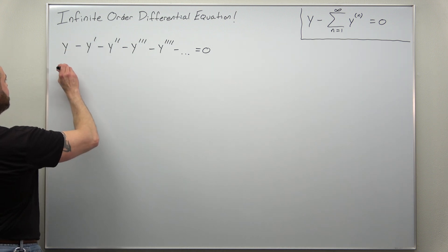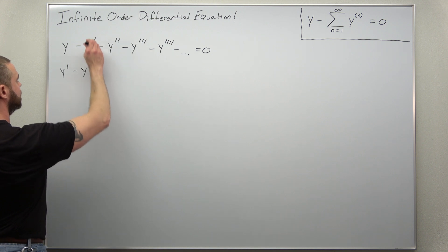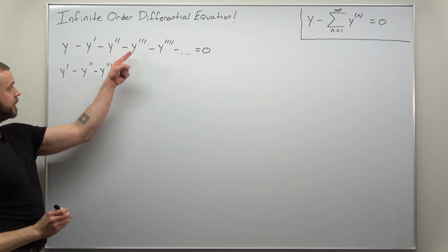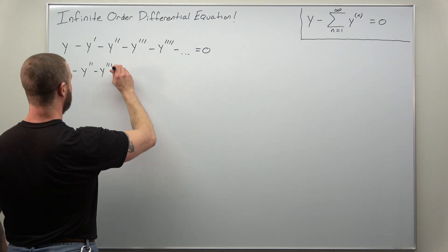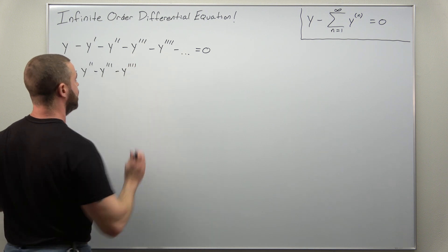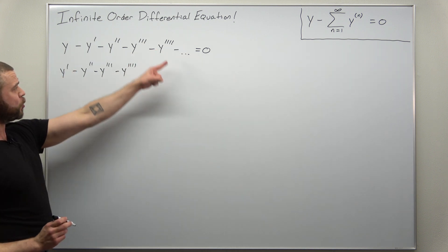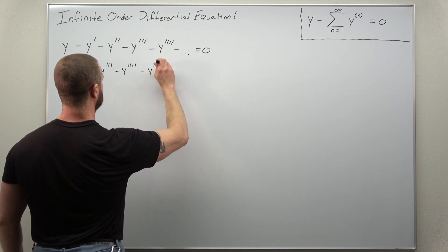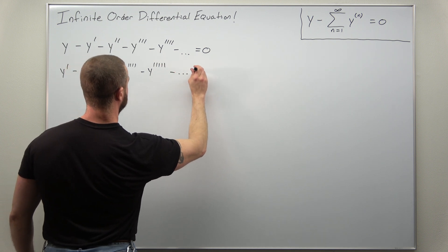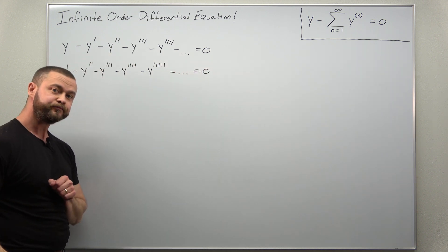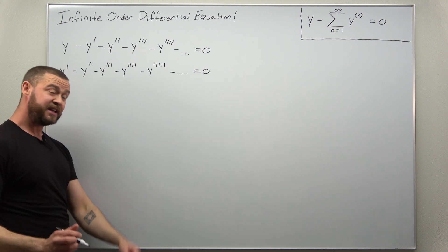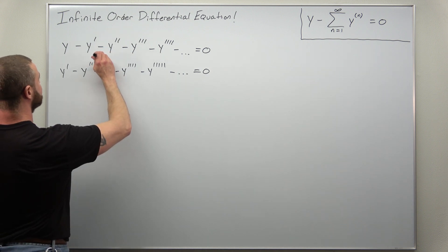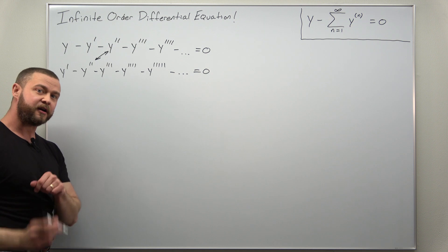So we're going to get y prime minus y double prime, differentiate this minus y triple prime, differentiate that minus y quadruple prime, and going one more — differentiating gives minus the fifth order derivative. We're going to subtract these two equations and notice that pairs will cancel.